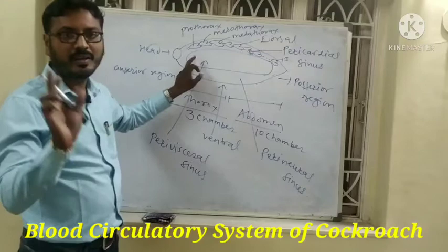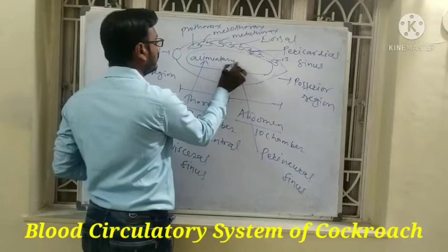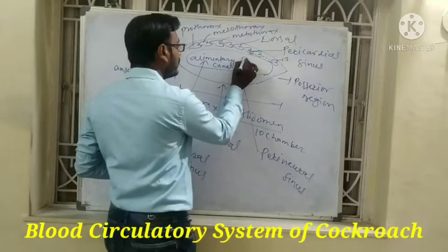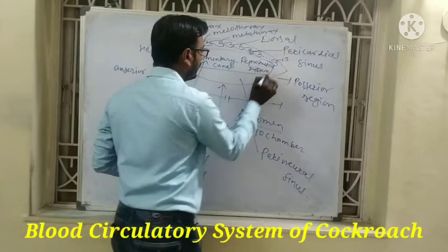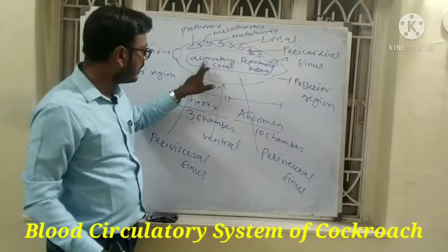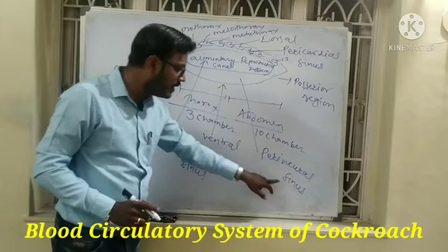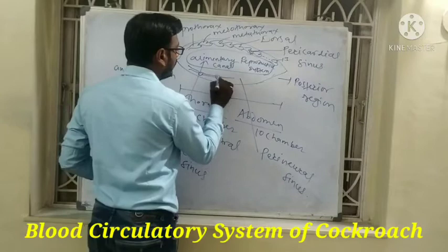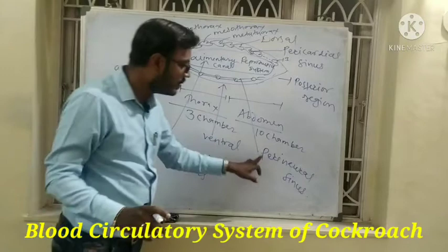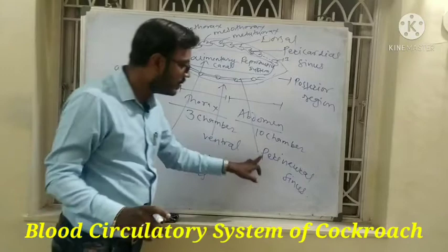The perivisceral sinus contains organs like the alimentary canal and the reproductive system. The pericardial sinus contains the heart. The perivisceral sinus contains the alimentary canal and the reproductive system in the middle portion. The perineural sinus, on the inner side, contains the nerve cord, which is part of the nervous system.